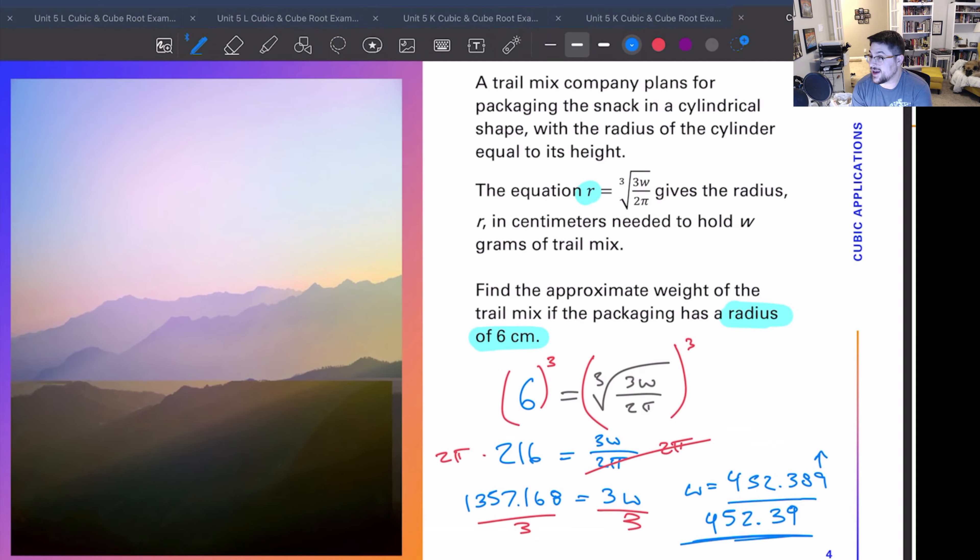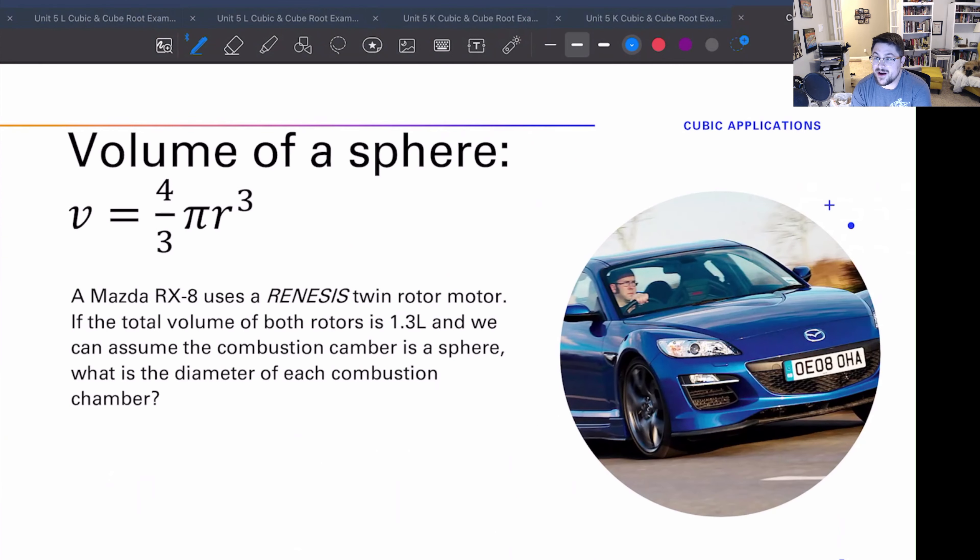Alright, hopefully that makes some sense. Hopefully this is making sense. Alright, let's go on, let's do the final problem which is a little bit of a challenge problem. We have a Mazda RX-8, now this uses a Renesis twin rotor motor. Okay, basically we have two giant spinning doritos that are going around going bang bang bang bang bang.